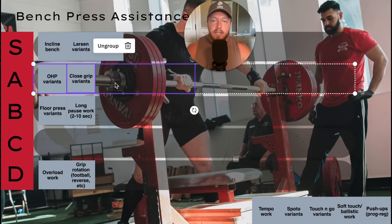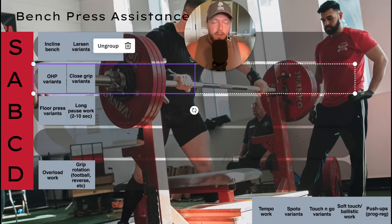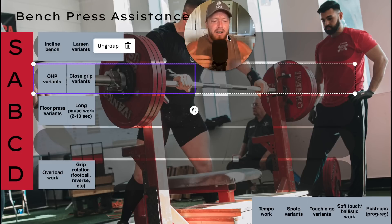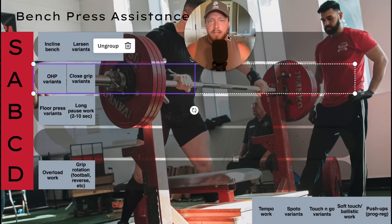Close grip variants — almost S tier. The reason it's not S tier is because it's not a staple all the time, but at some point during the training cycle I'm going to throw in close grip work. My two favorites are regular close grip bench press or close grip Larson. It increases your range of motion — and contrary to what people think, it's more chest AND triceps. People always talk about close grip being more tricep dominant, but it is not more tricep dominant. It's harder in the lockout because the sticking point is increased, your range of motion is increased, but this has nothing to do with your triceps dying out.